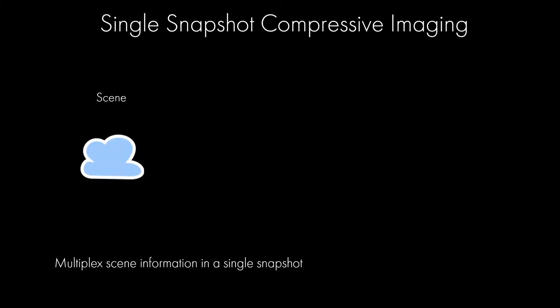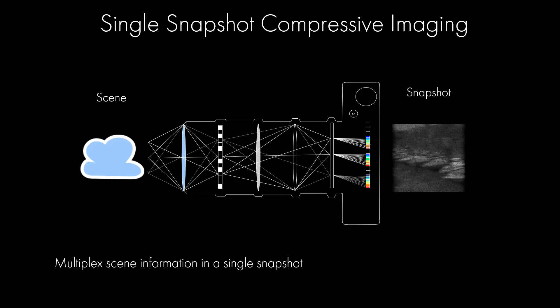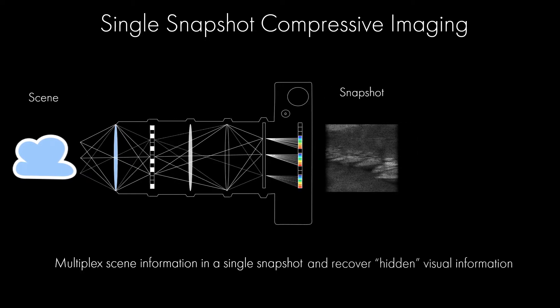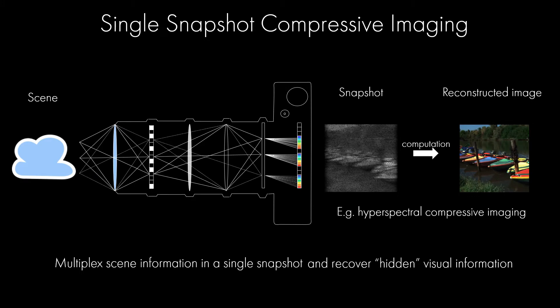In single snapshot compressive imaging, the goal is to capture a scene with an optoelectronic system that encodes interesting visual quantities of a scene in a single snapshot. The snapshot obtained with such a system does not look like your typical photograph, but it is possible to recover the visual quantity encoded by the system using algorithms. For instance, one can reconstruct multiple spectral bands from a single grayscale picture to perform hyperspectral imaging.